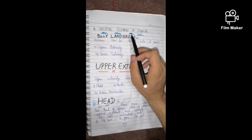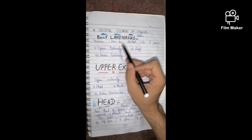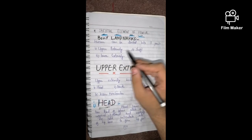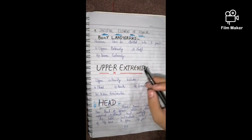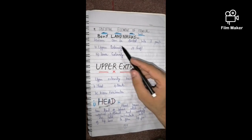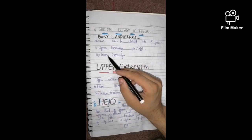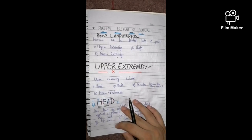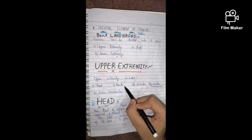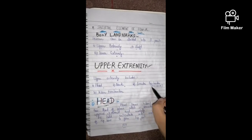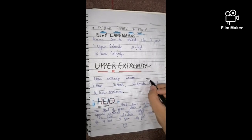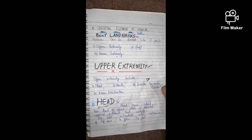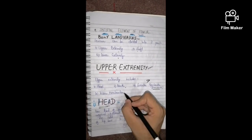The next topic is the skeletal elements of the femur, or bony landmarks. We are doing osteology of the femur before moving on to muscle attachments and nerves. The femur can be divided into three parts: the upper extremity, the shaft or middle extremity, and the lower extremity. The upper extremity includes the head, neck, greater trochanter, and lesser trochanter. Trochanter means a prominence or outgrowth.